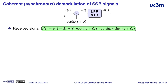The received signal is multiplied with a cosine having the same frequency as the carrier, and then we have a low-pass filter with the bandwidth of the modulating signal. Initially, we are going to consider that the phase of this cosine can be different from the phase of the carrier, to analyze the effect of a non-coherent receiver.